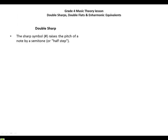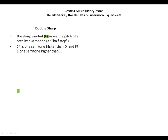Double sharp. The sharp symbol raises the pitch of a note by a semitone or half step. D sharp is one semitone higher than D, and F sharp is one semitone higher than F.